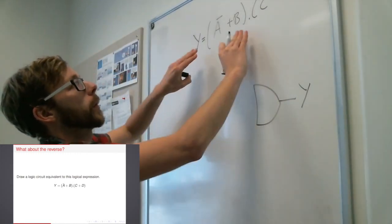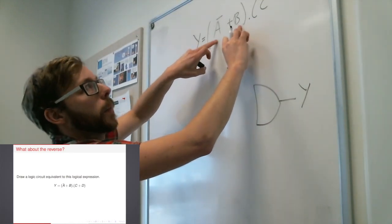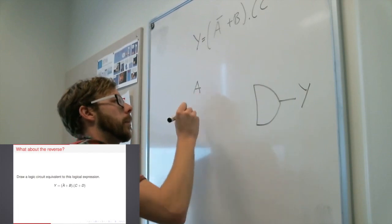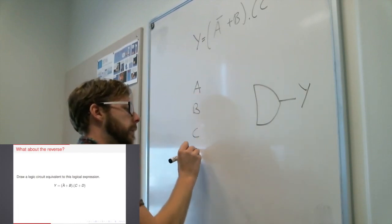And that AND gate is going to have two inputs. It's going to have NOT A or B and C and D. Okay. So now let me write my inputs up here. A, B, C, D.